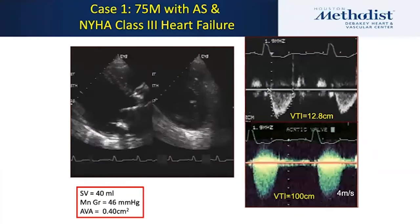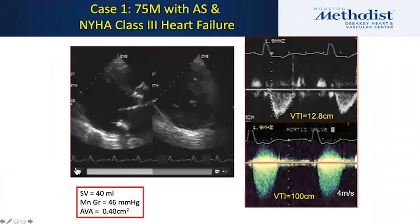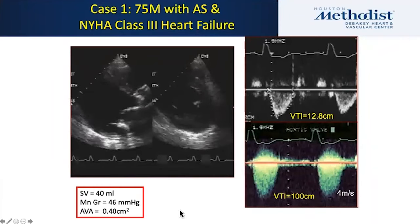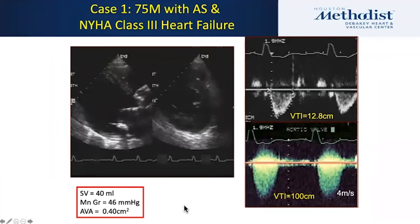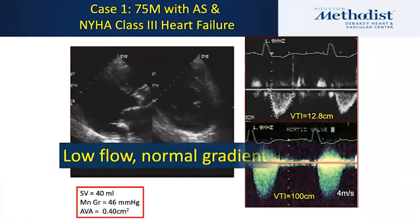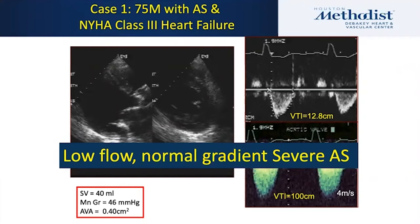Here's a case of a 75-year-old with aortic stenosis and significant heart failure symptoms. At baseline, his stroke volume is 40 mLs, mean gradient is 46, and calculated valve area by continuity equation is 0.4. This is low-flow, normal-gradient AS — this is bad AS, in fact the worst AS — but he still manages to maintain a high gradient with a bad ventricle. That's a fairly easy diagnostic challenge.